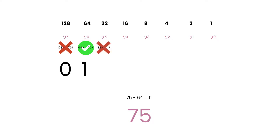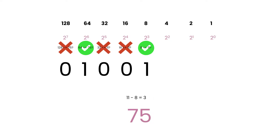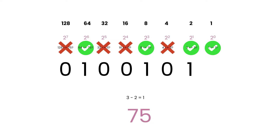32 is not less than 11, so we'll put a 0 in this column, and do the same for 16. 8 is less than 11, so we'll put a 1 in this column and subtract 8 from 11 to give us 3. Now we're checking if these values are less than or equal to 3 — 4 is not, so we'll put a 0 in that column. 2 is less than 3, so we'll put a 1 in there, and take 2 away from 3, leaving 1 still to make up. And obviously 1 is less than or equal to 1, so we fill that column in with another 1. This gives us our final binary representation of 75.